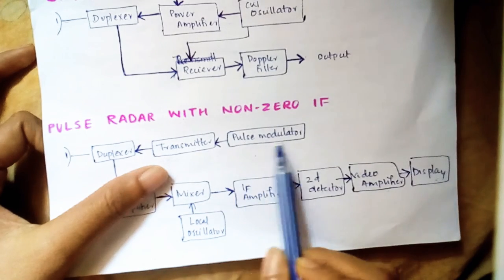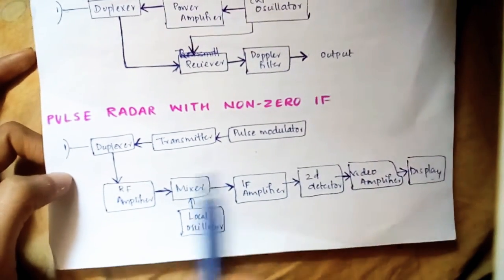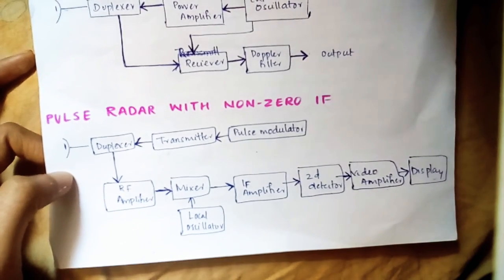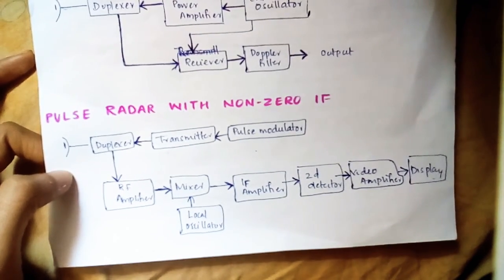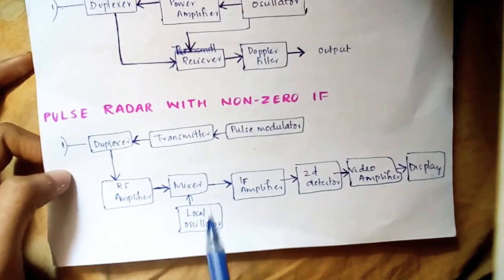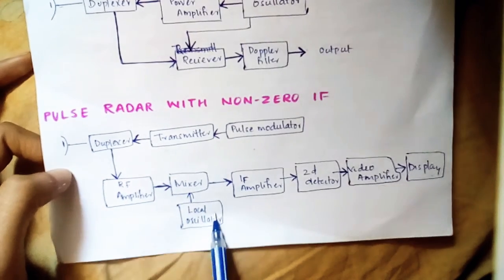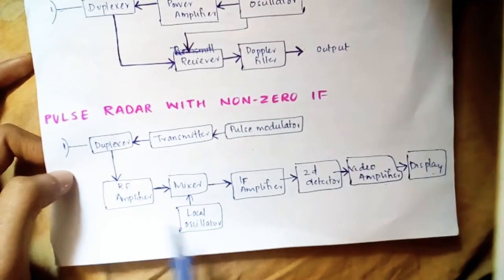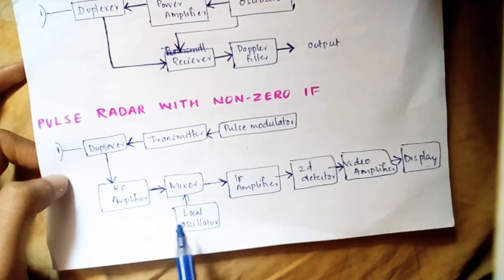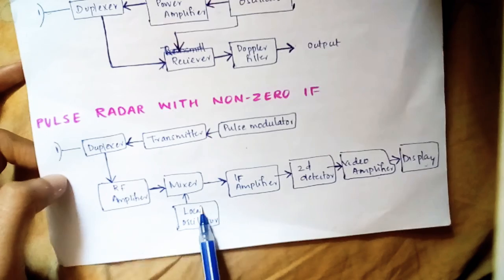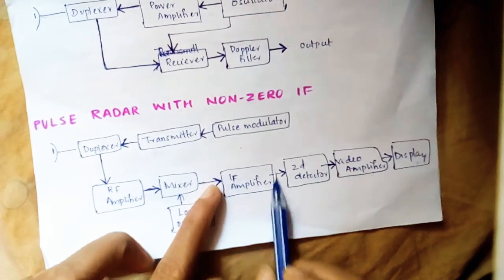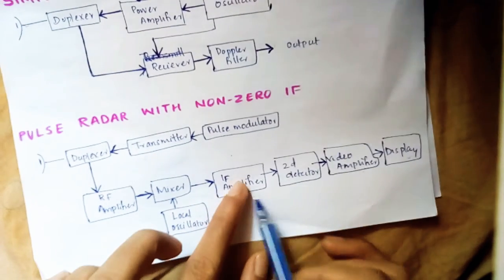Now in the receiver section, where the IF comes, we need a mixer for that purpose. The mixer has two inputs: RF amplifier and local oscillator. With these inputs we get IF, and that is amplified.